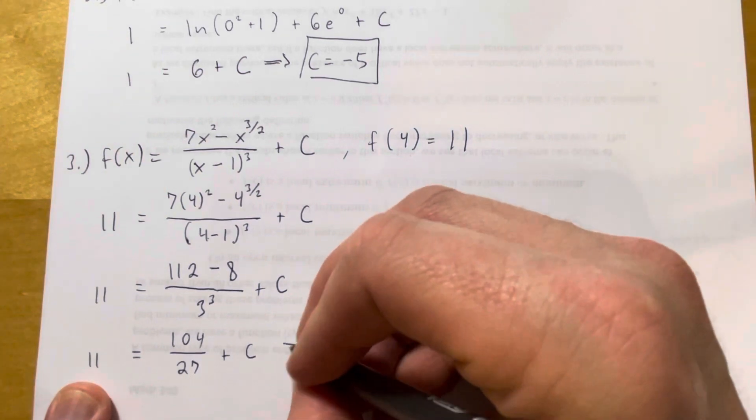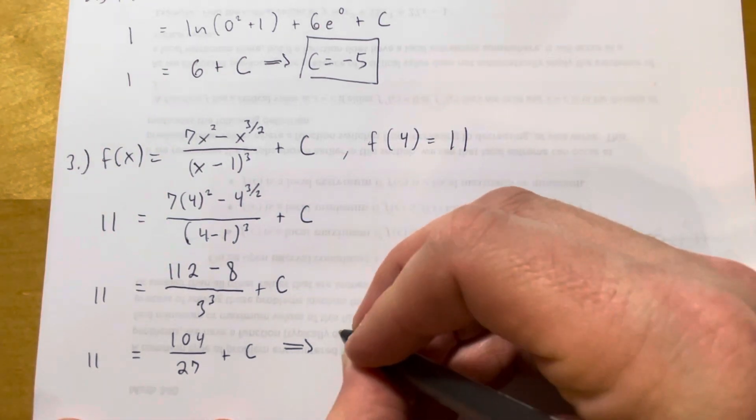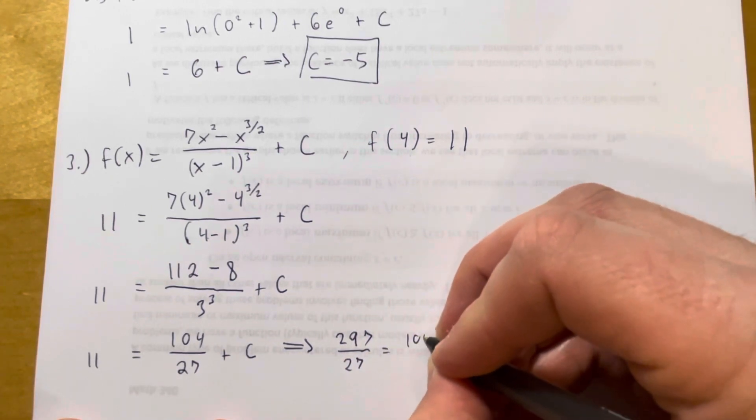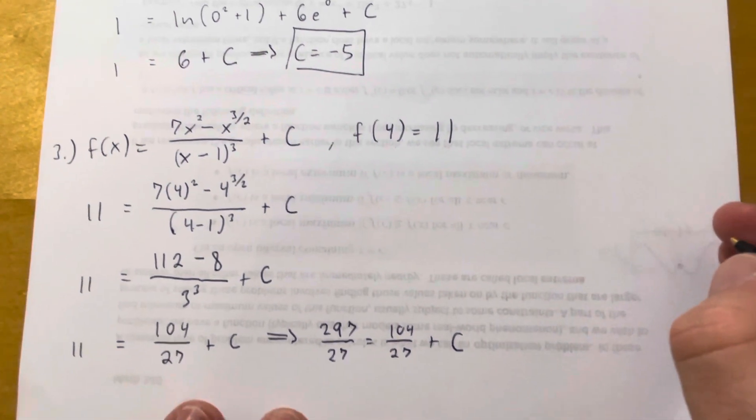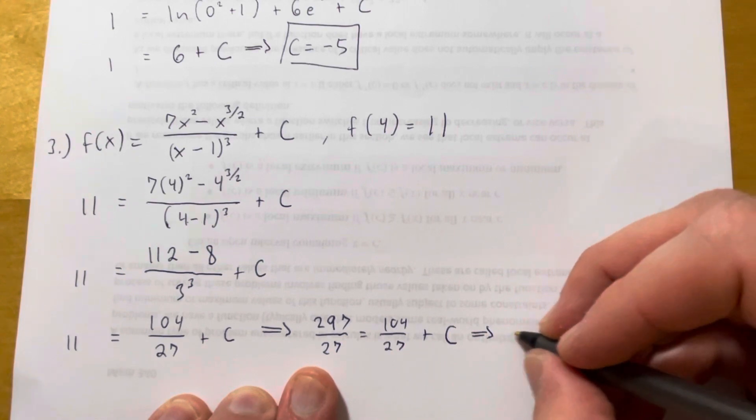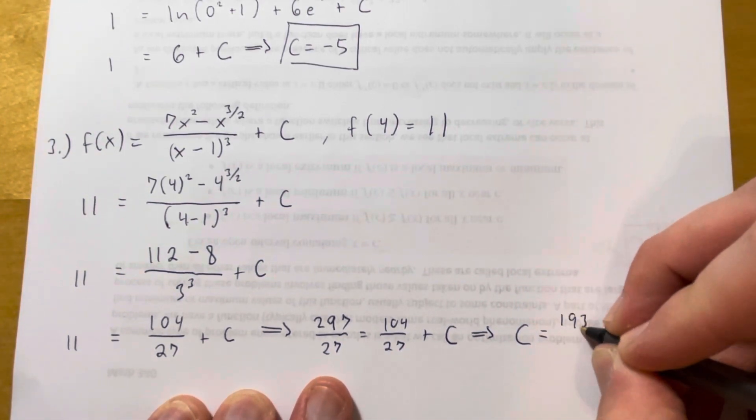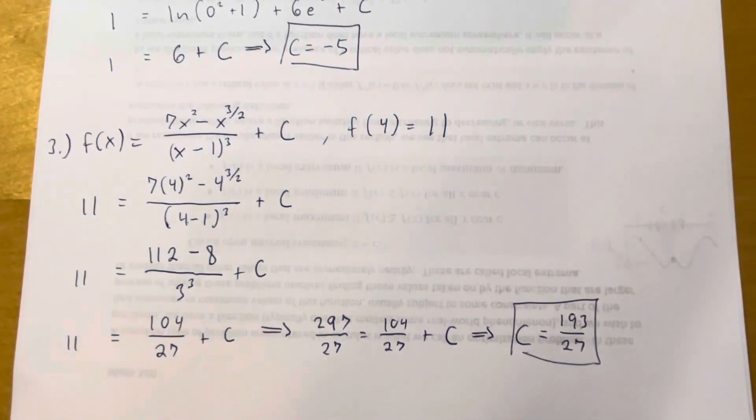So 11 times 27 is 297. So this is going to look like 297 27ths equals 104 27ths plus C. And now I can just subtract the 104 27ths from both sides. Since I have that common denominator, I'll be able to find C pretty easily now. It's just 193 over 27. Occasionally, you get answers that are kind of nasty fractions, and that's nothing to be afraid of. It's just, that's life. Life comes out this way a lot.